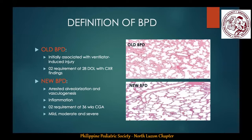A significant issue when reviewing the literature on BPD is that the definition has changed over time. BPD was first identified in 1967 in a group of preterm infants who had required ongoing respiratory support after an initial period of oxygen and ventilation for respiratory distress. Much progress has since been made with the introduction of widespread antenatal steroids, postnatal surfactant, more refined ventilatory strategies, and better nutrition. These factors altered the pathology and clinical course of BPD and led to the revision of its definition.